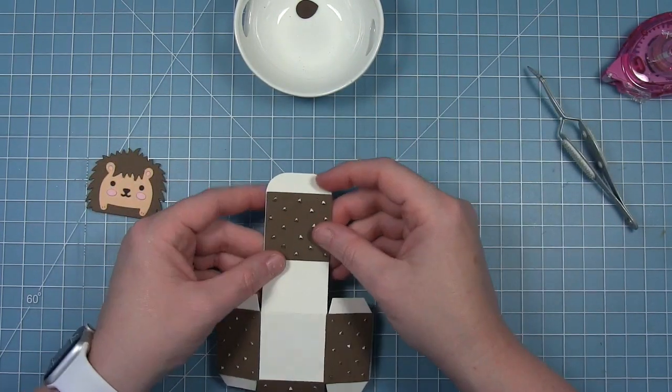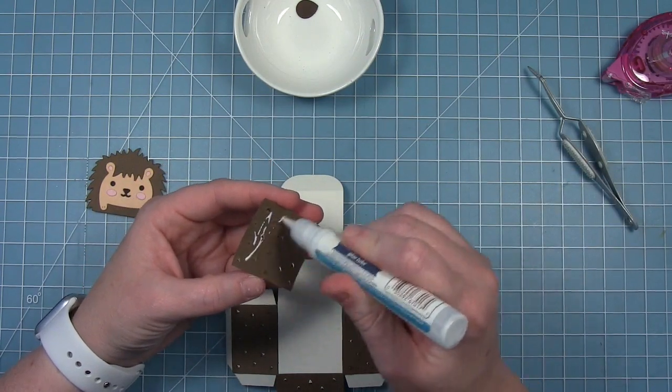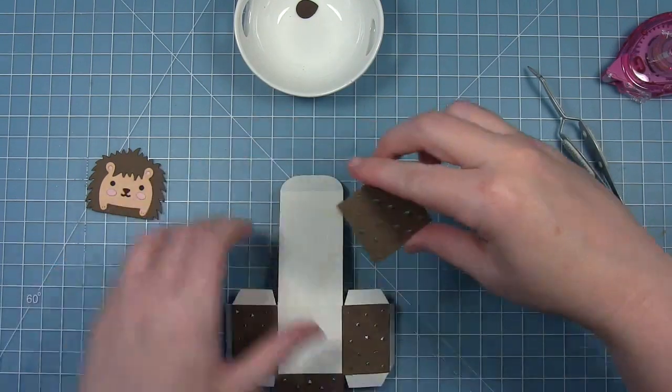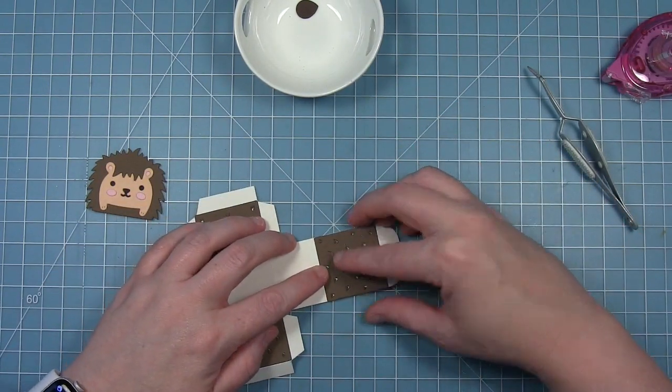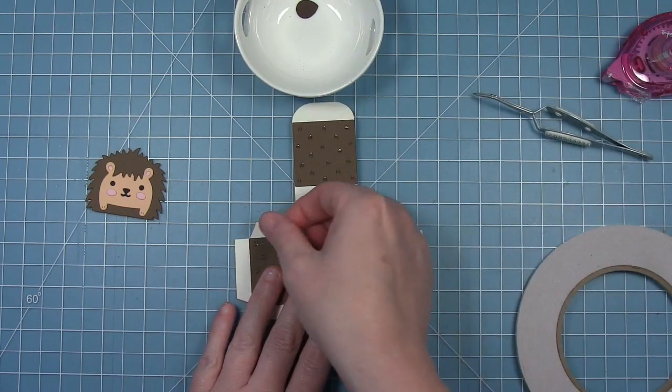Now for the top, I'm making sure that I have them pointing away from the head. You just want to check and make sure you've got them in the right direction. I'm just layering that on the top using those fold score lines that I had earlier as my guide.